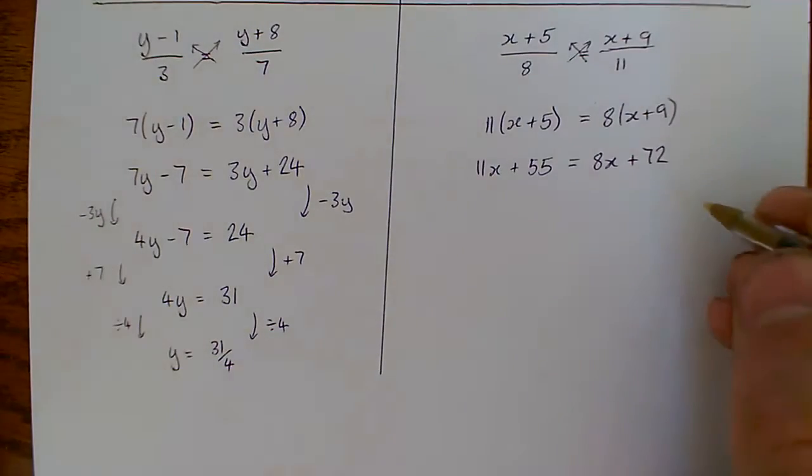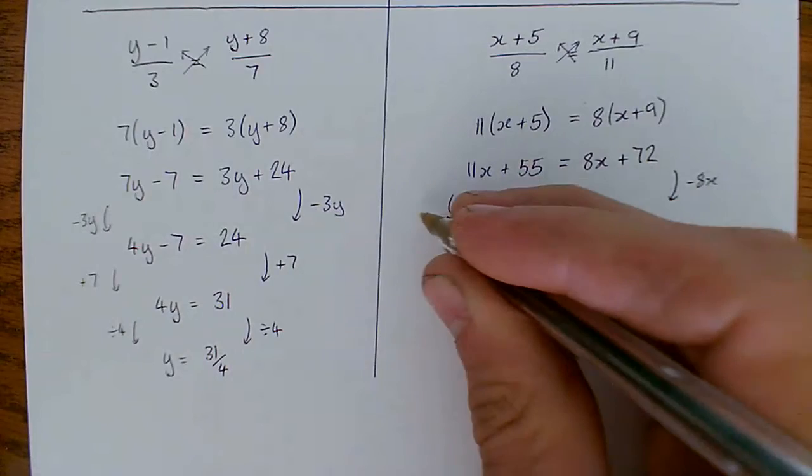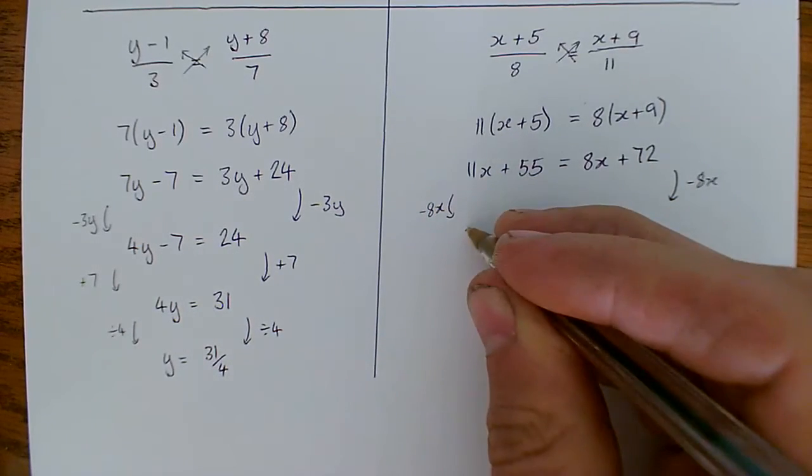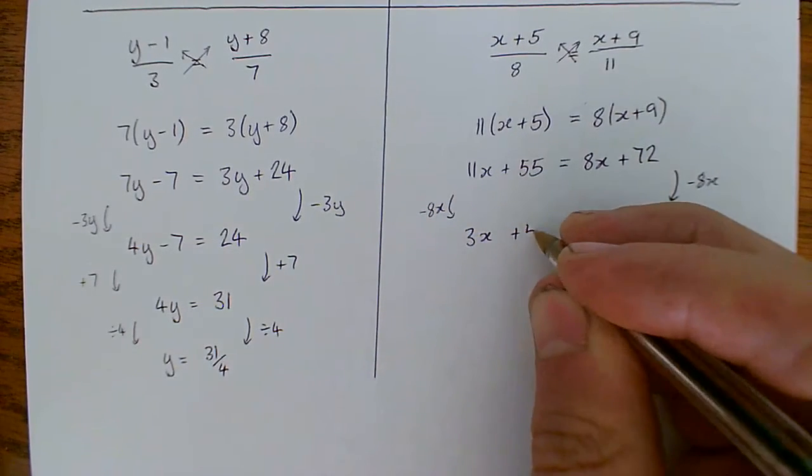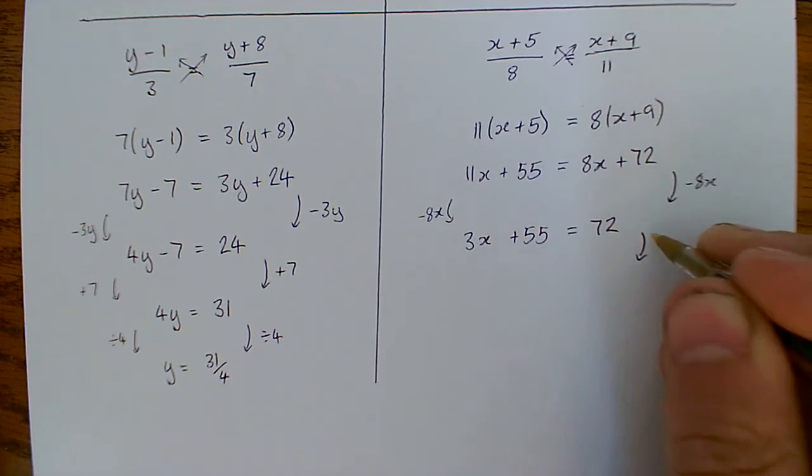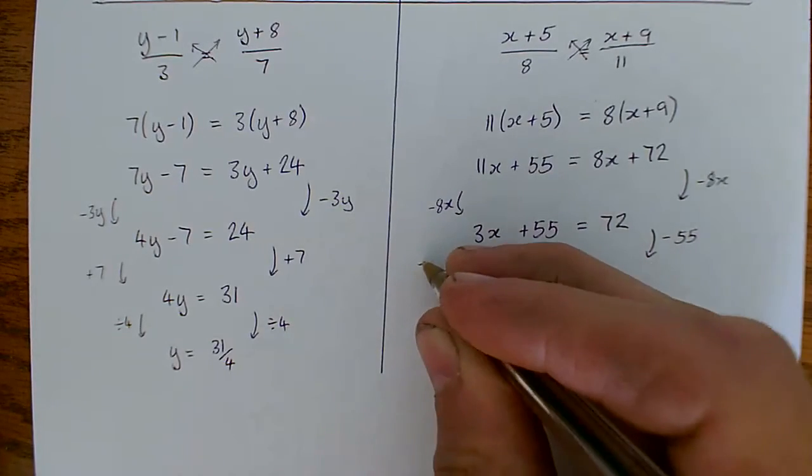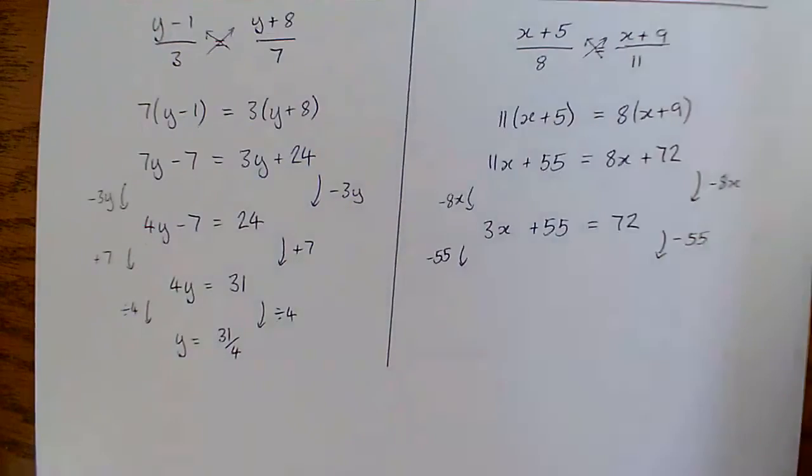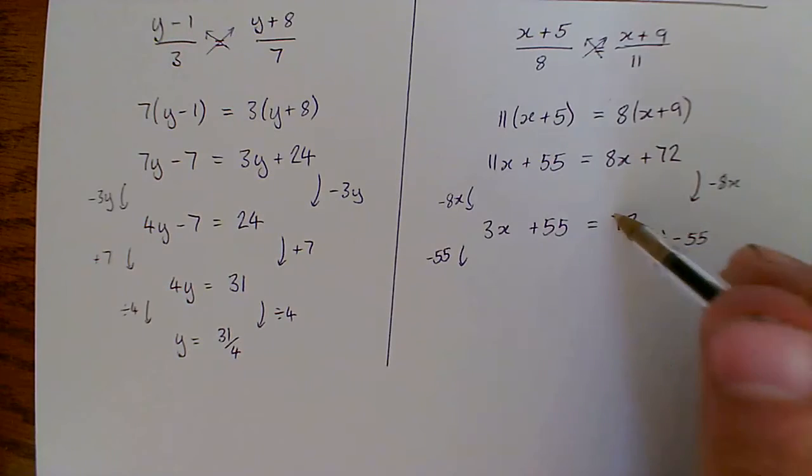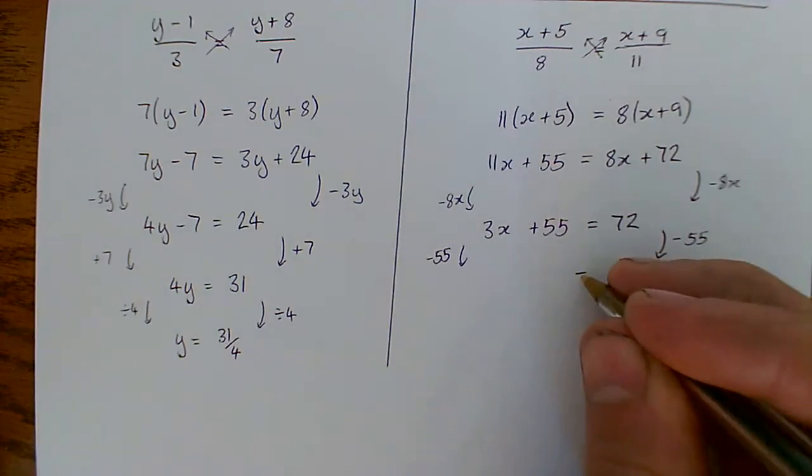Now start solving. Continue solving by taking 55 off both sides. Taking quickly to take 55 off. 72 take away 50 is 22. 5 off to 2. We've got to go to that 3 more. So we're going to get 17 there.